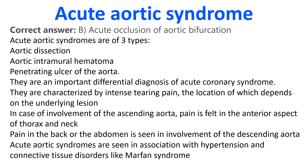Acute aortic syndromes are of 3 types: aortic dissection, aortic intramural hematoma, and penetrating ulcer of the aorta. They are an important differential diagnosis of acute coronary syndrome. They are characterized by intense tearing pain, the location of which depends on the underlying lesion.